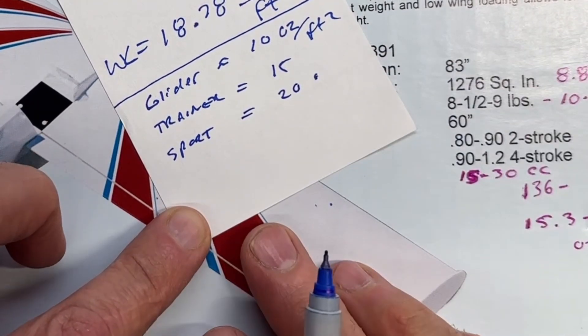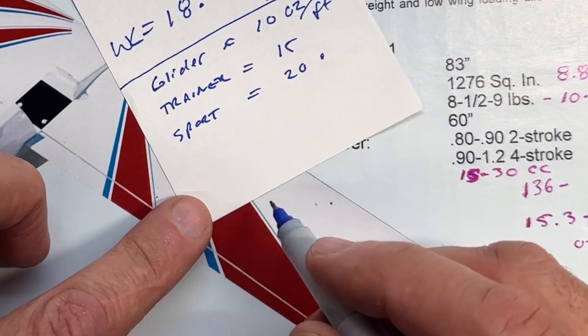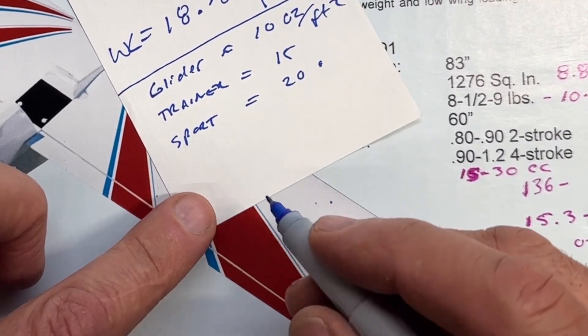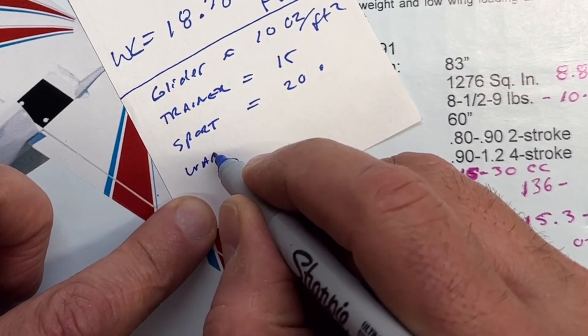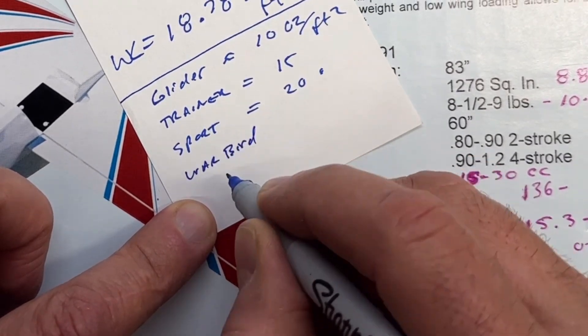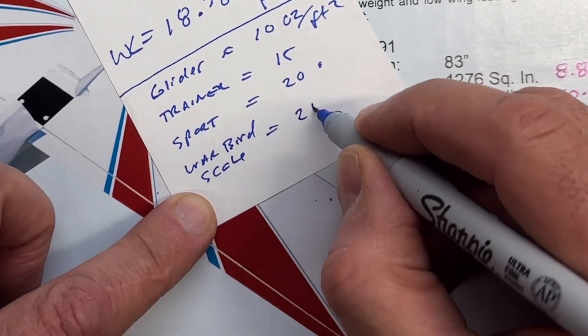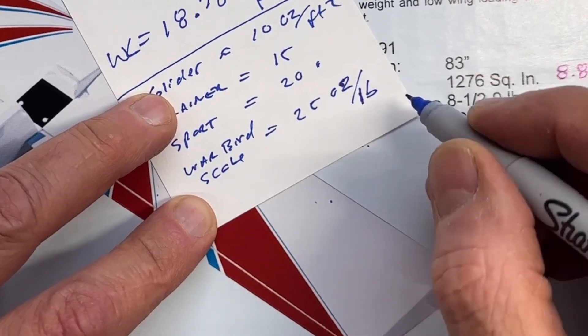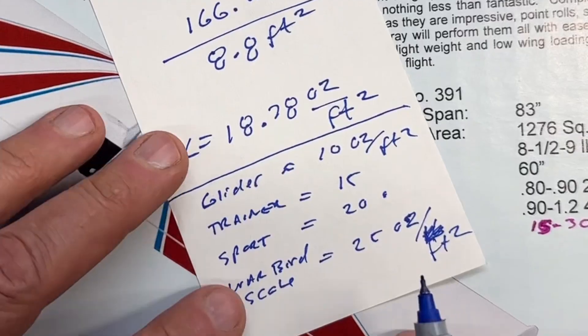For a sport, sport plane, it's around 20. And then for something like a scale, like World War II fighter or something like that, not a sport plane, but something like a World War II warbird or something like that, we're talking, we'll just call it a warbird for fun. I hope it's put scale here. You are about 25 ounces per foot squared.